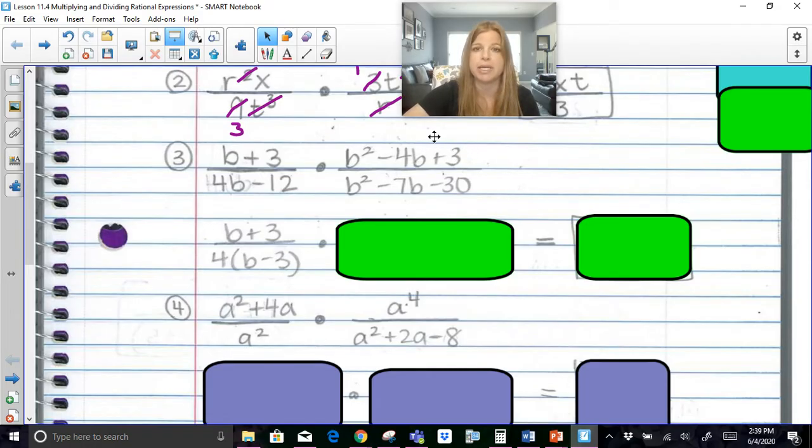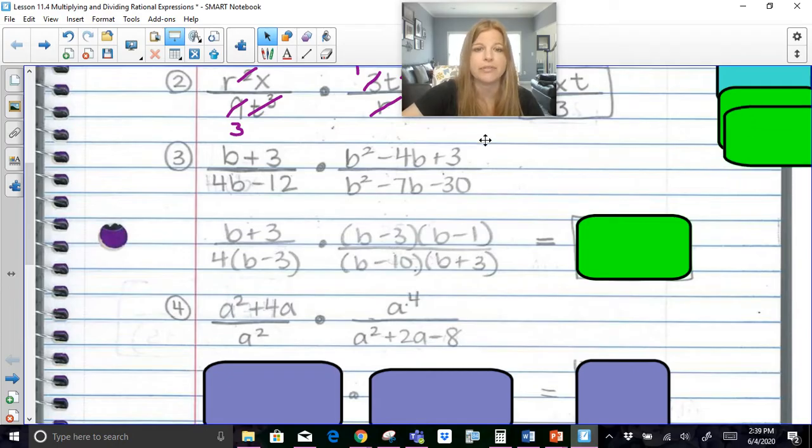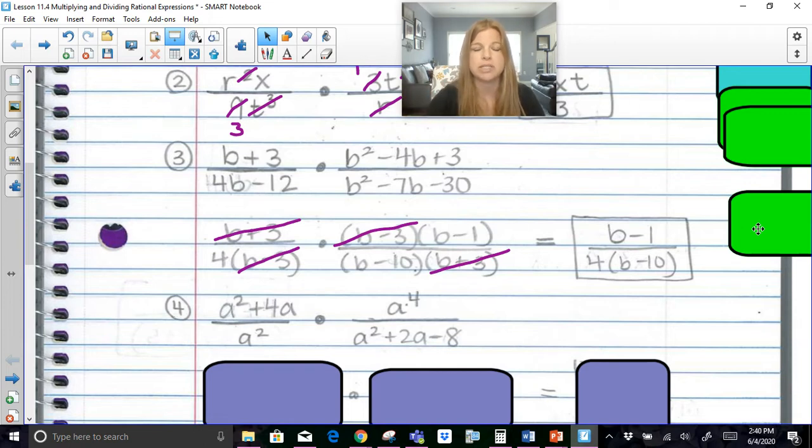The trinomial. We know what factor pair of 3 adds up to give me a negative 4. Well the only way to get 3 is a 1 times 3. You would need a negative 1 and a negative 3 to add up to get to that negative 4. What factor pair of negative 30 gives you a negative 7? 3 times 10. 3 and a 10 would work as long as the 10 is negative and the 3 is positive. And now remember cross simplifying. So I can cross out this b plus 3 and this b plus 3. What else do you see you can simplify? b minus 3 and b minus 3. So my numerator is left with just b minus 1. Now my denominator, I have 4 times b minus 10 and I literally just write it like that. There's no need to distribute.